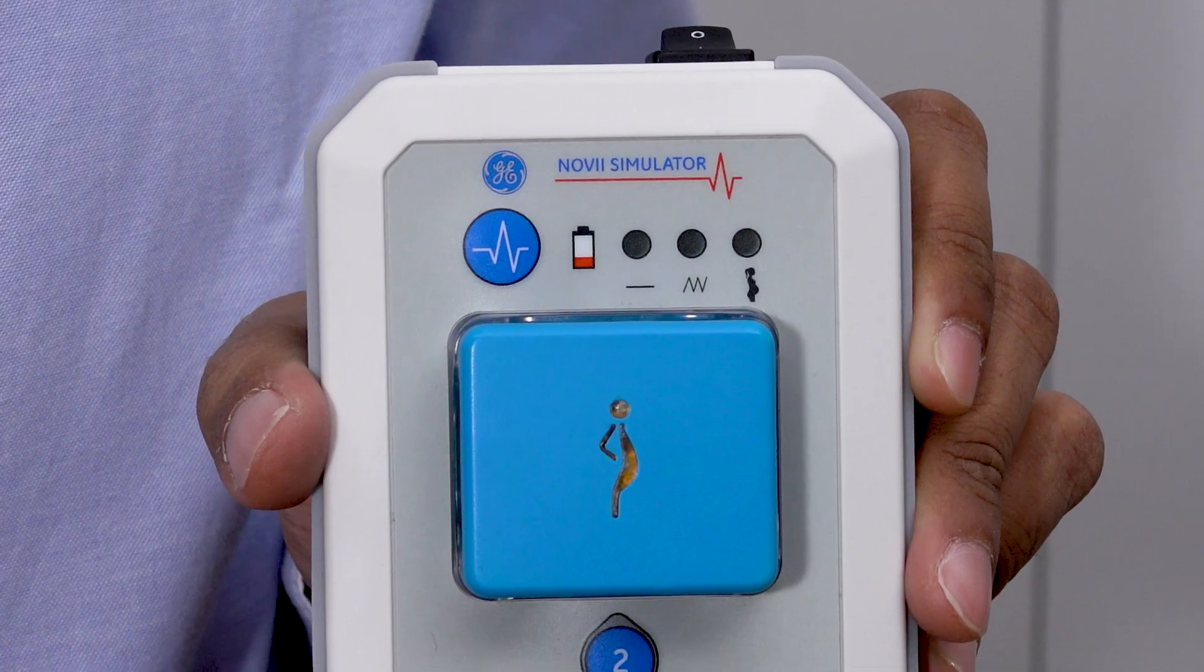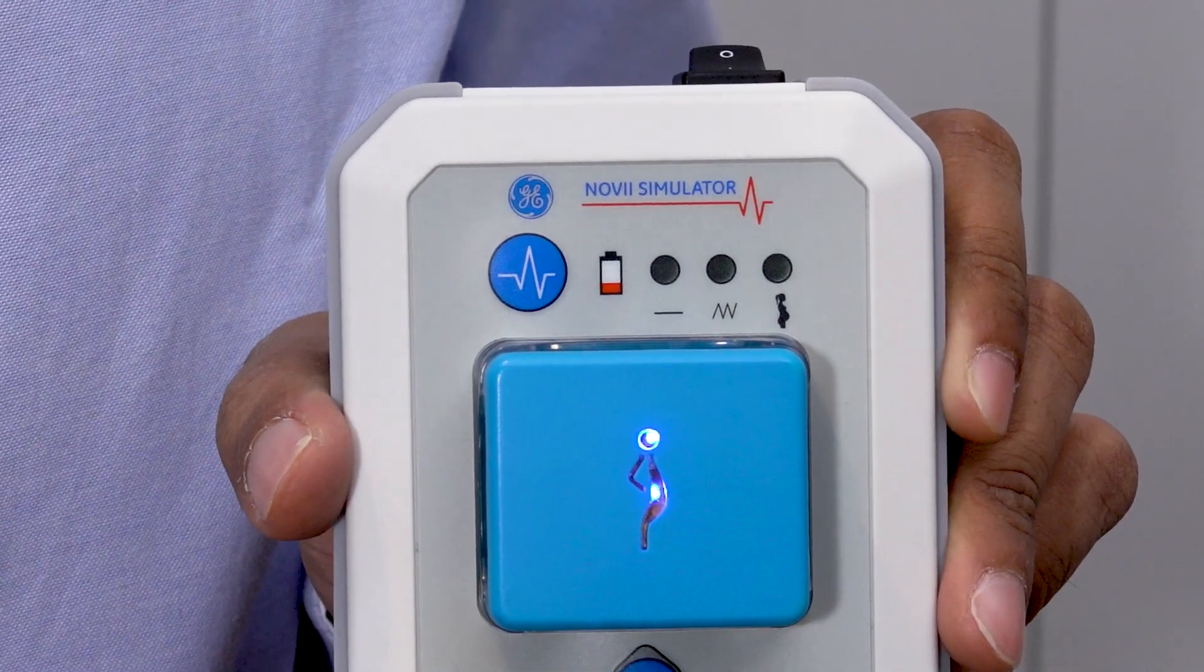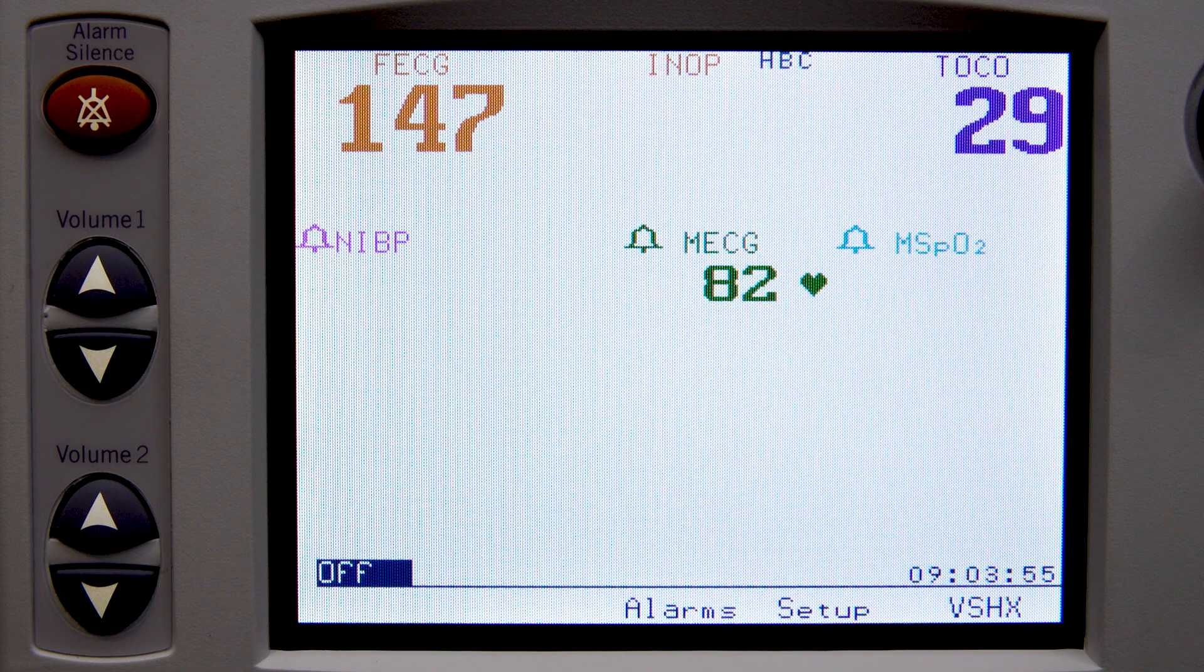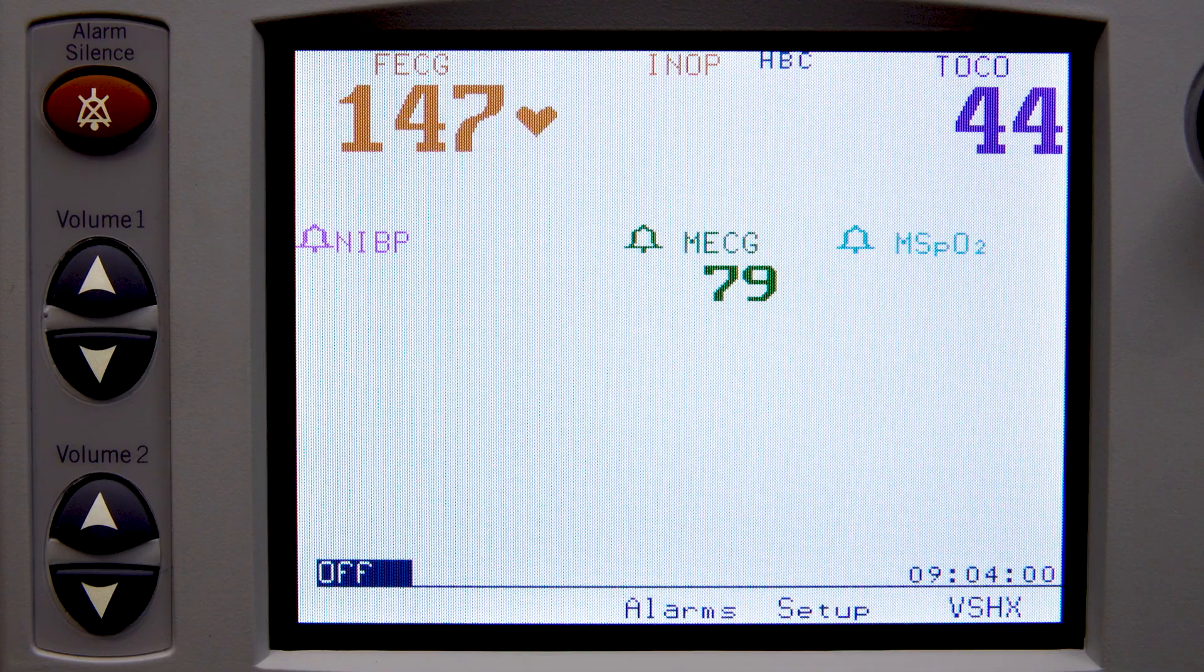And last is demo mode, which simulates maternal heart rate, fetal heart rate, and uterine activity signals as well. But for this mode, in a typical labor scenario pattern, this can be used to demonstrate the Novi wireless patch system.